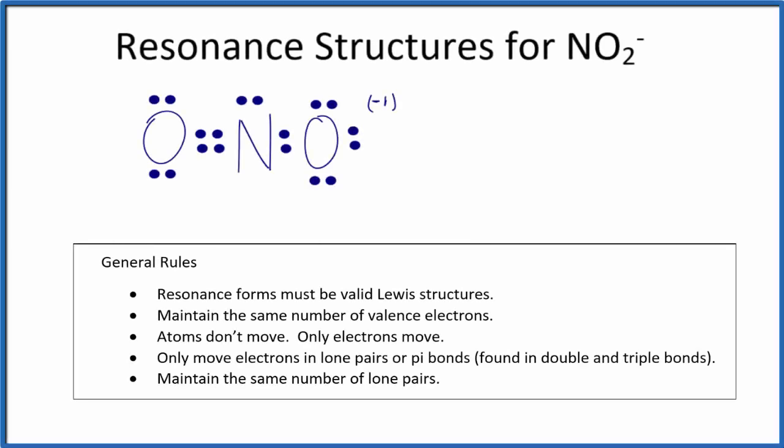To draw the resonance structures for NO2-, the nitrite ion, we'll start with a Lewis structure. We have a double bond here and a single bond, and a formal charge of minus one on the oxygen with the single bond.